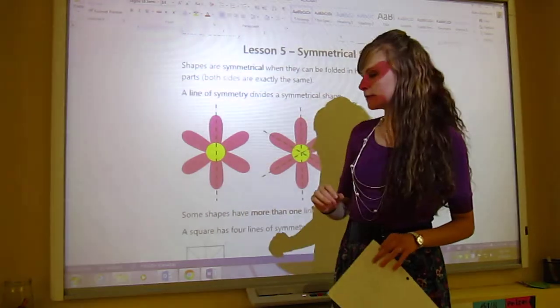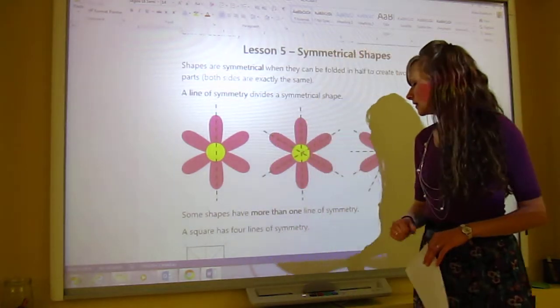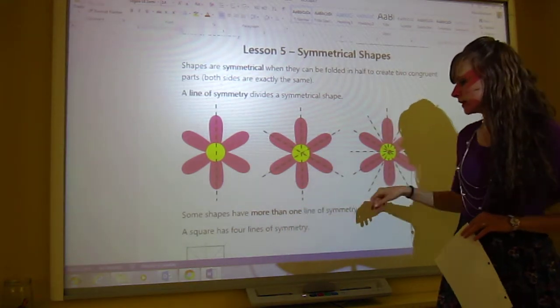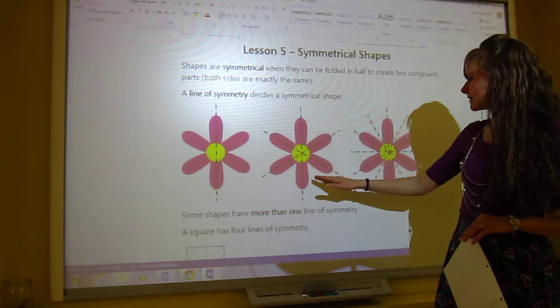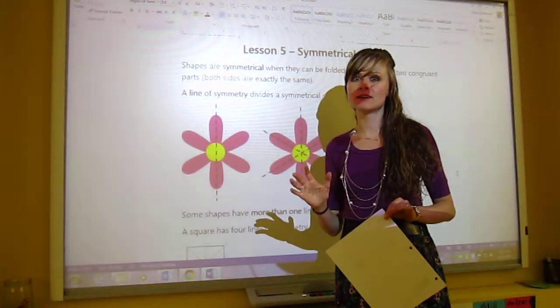Now some shapes are special and some shapes have more than one line of symmetry. And that says right here, some shapes have more than one line of symmetry. And this flower is actually really special. It has a ton of lines of symmetry.